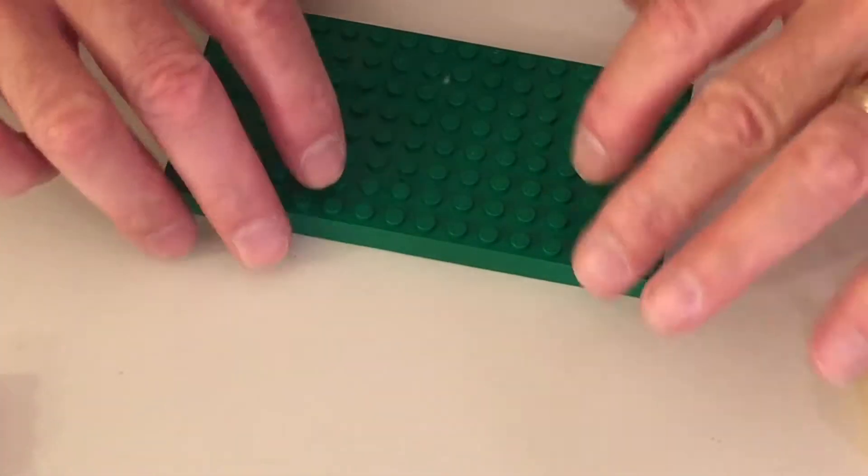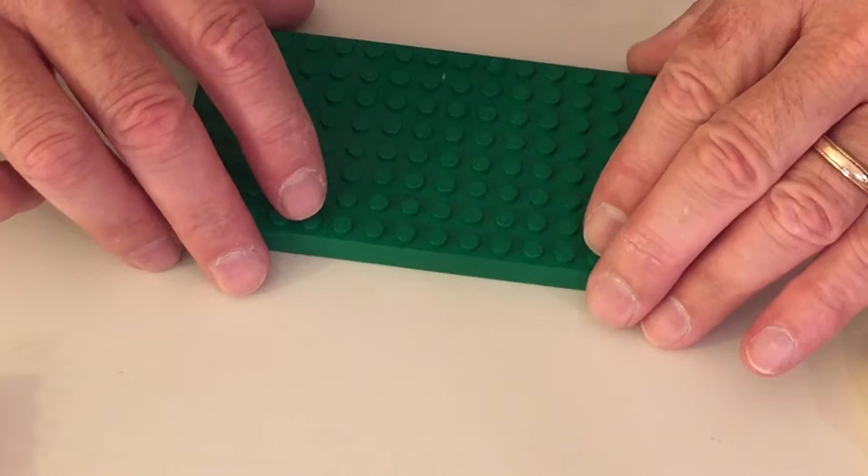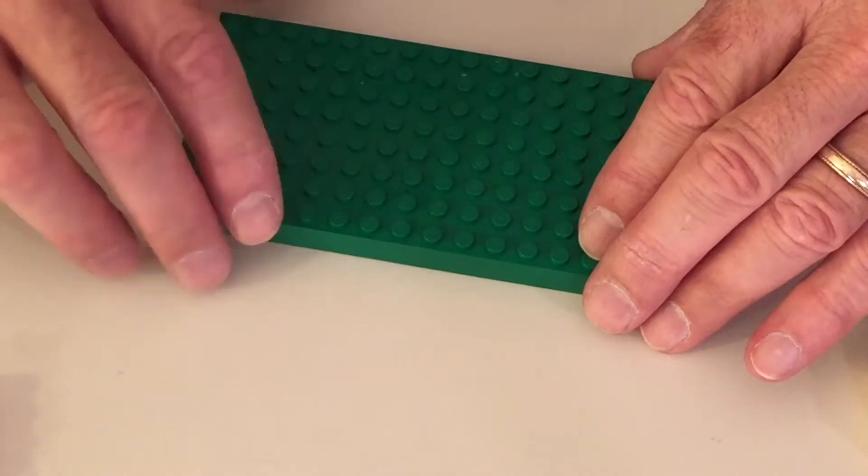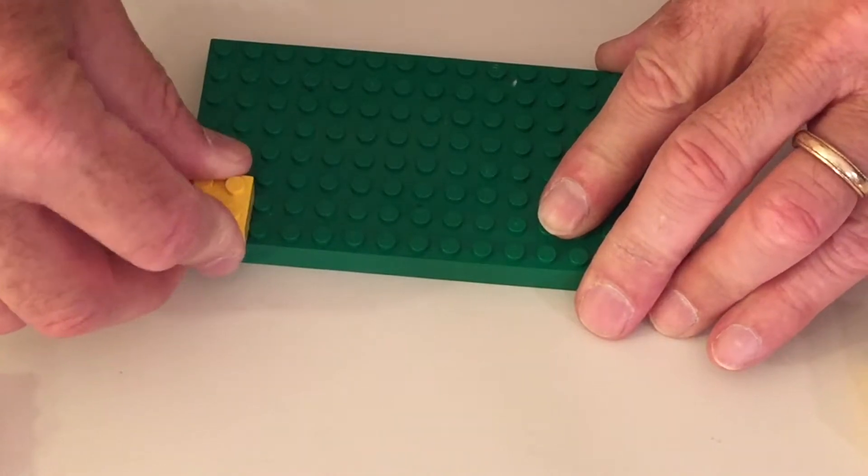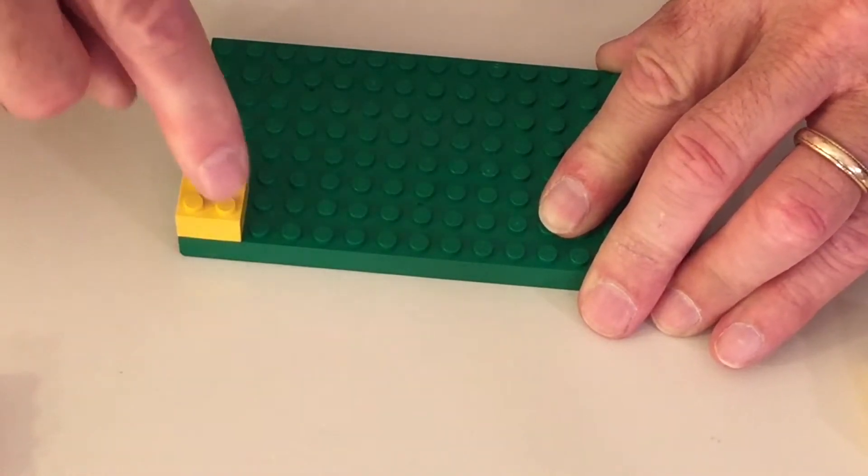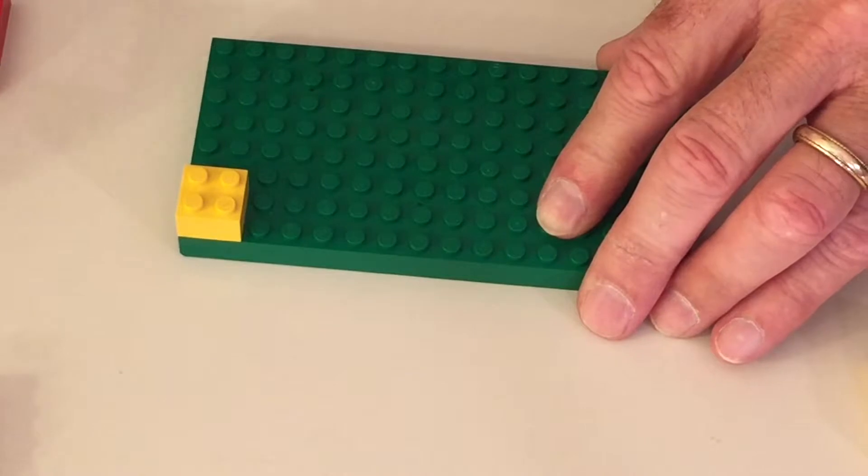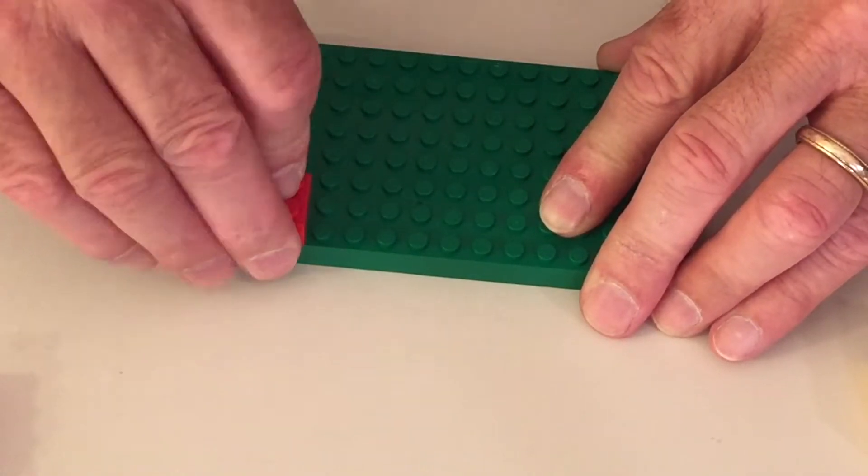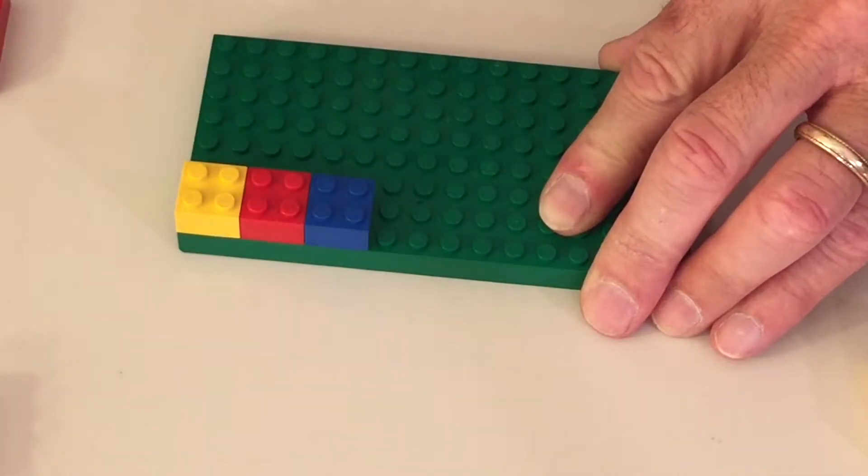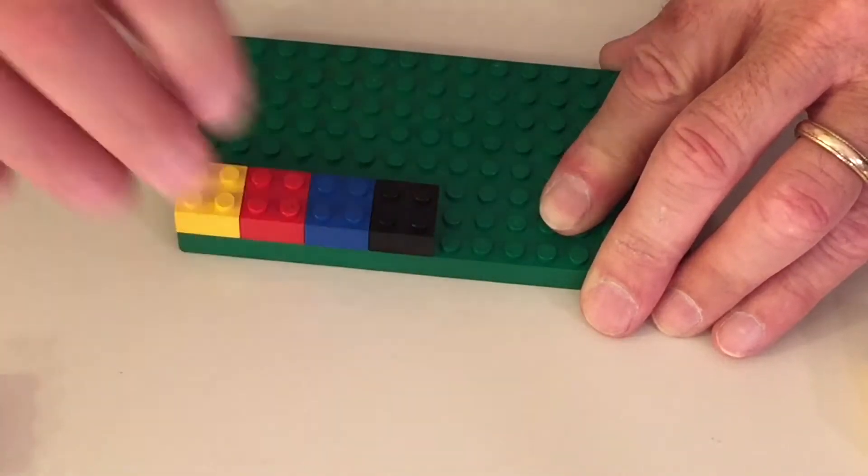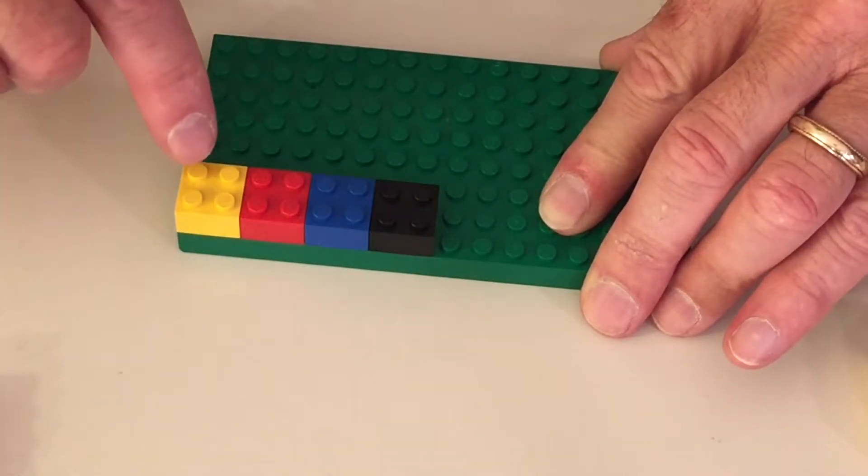All right everybody, we've had fun exploring with our blocks. Now it's time to do multiplication activity number three and we're going to start by putting down some four dot blocks. Here's one four dot block. One, two, three, four. We're going to put down eight four dot blocks. Here's two, three, four dot blocks, four four dot blocks.